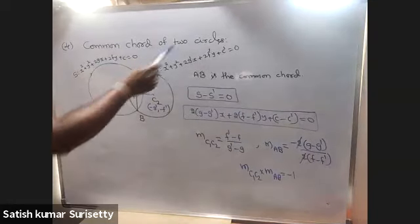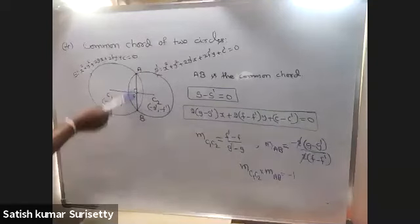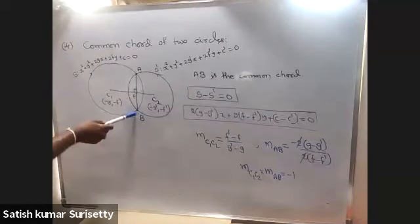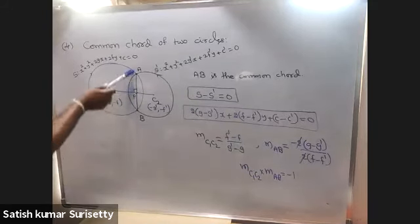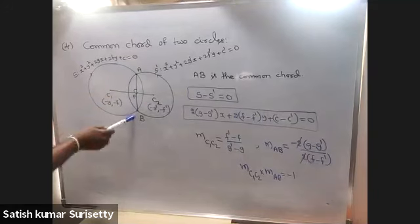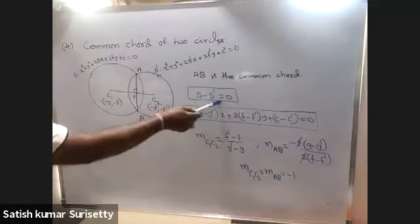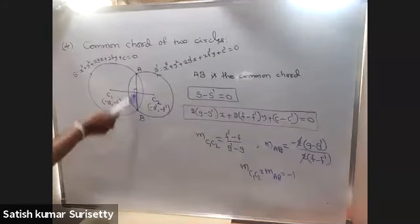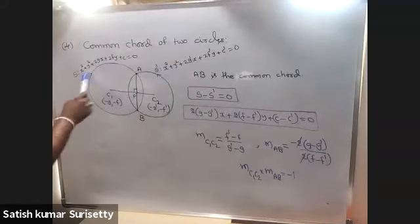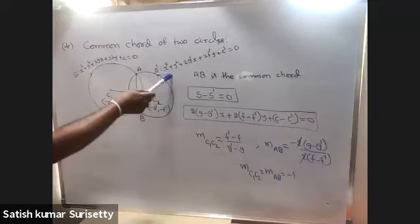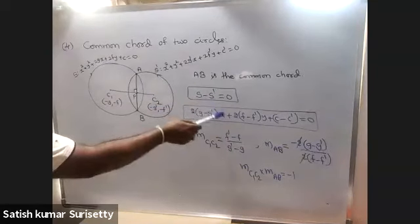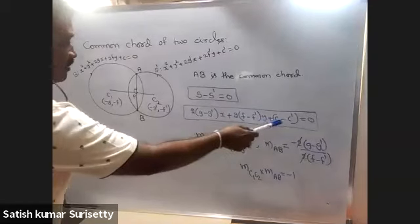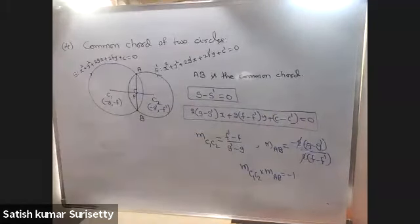Common chord of two circles: if two circles intersect in two distinct points, the line segment joining those points is called the common chord. Consider the two circles as S and S dash. To find the equation of the common chord, take S minus S dash equals 0, because the common chord is a linear equation and the circle is a second-degree equation. Eliminating the second-degree terms gives the first-degree equation: 2(G - G')x + 2(F - F')y + (C - C') = 0, which is the equation of the common chord.